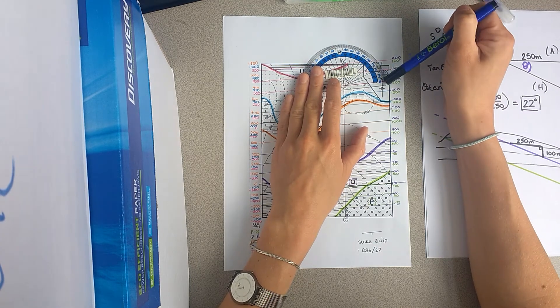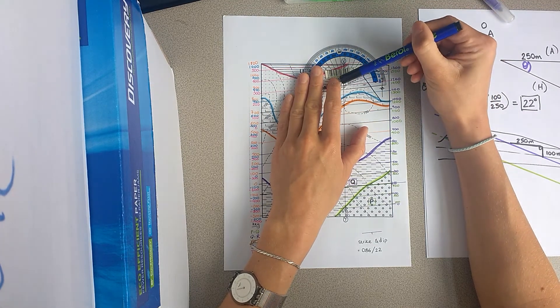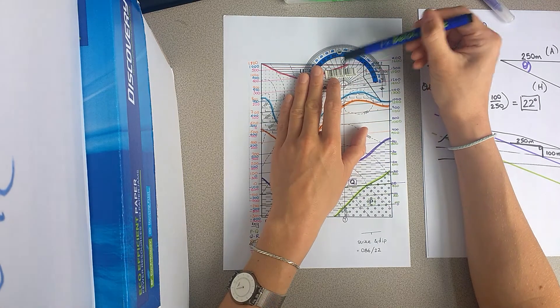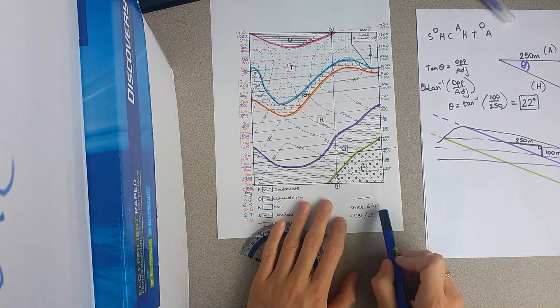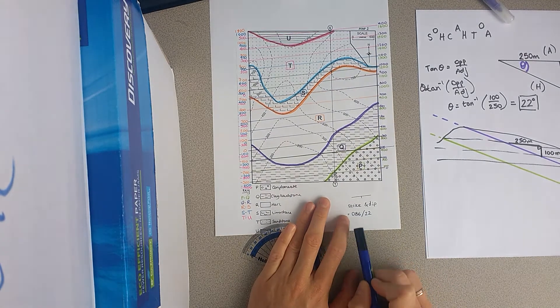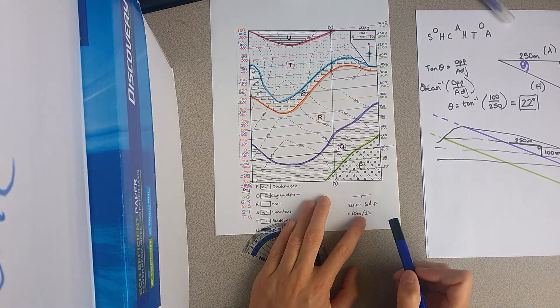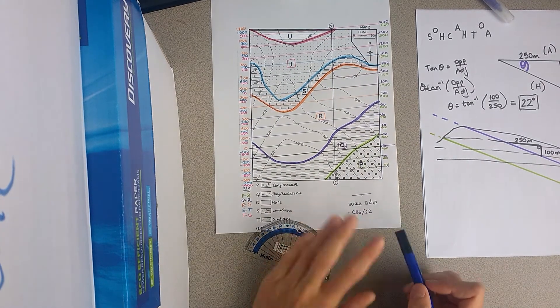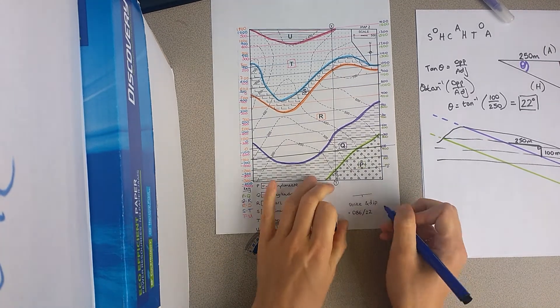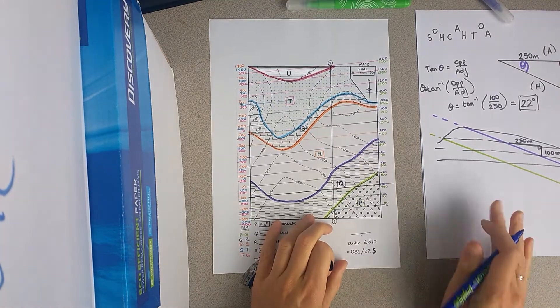So, if we go round from 0 to where north is, you'll see that this is 86 degrees. So, our strike and dip is 86, and we always write that as three digits, so 086, with a dip of 22, and that is going to the south.